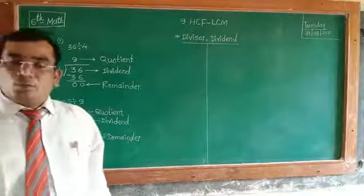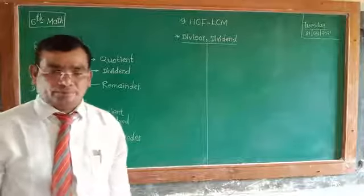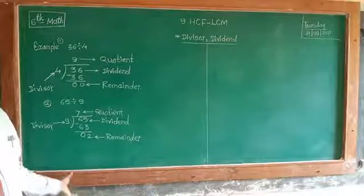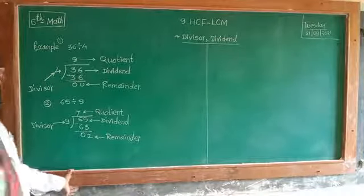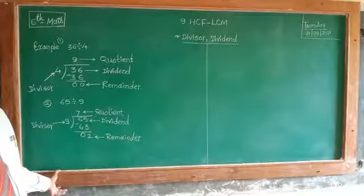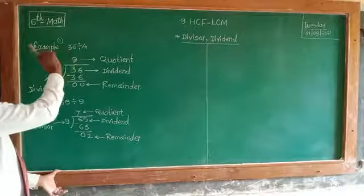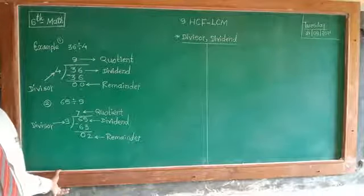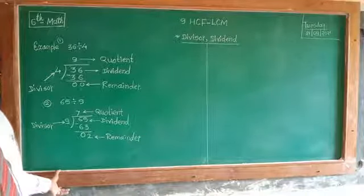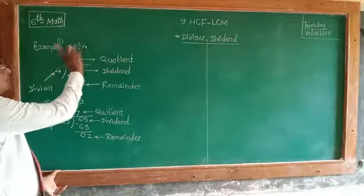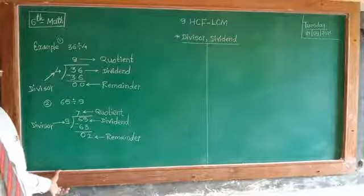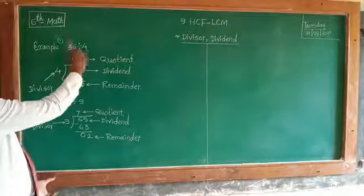When we divide 36 by 4, the remainder is 0. Therefore, 4 is a factor of 36, and 36 is a multiple of 4.